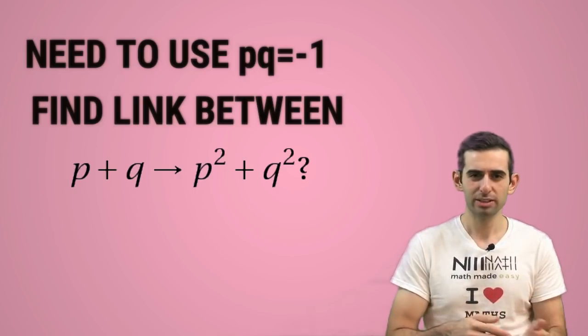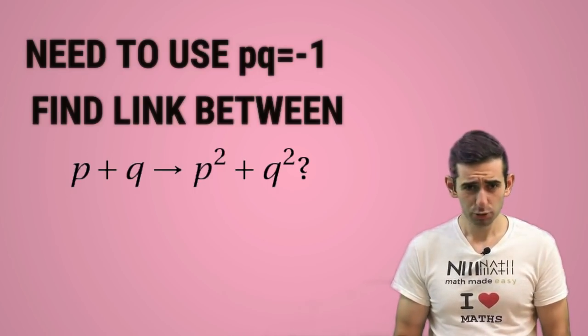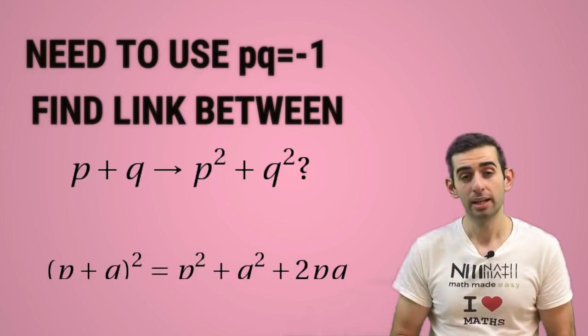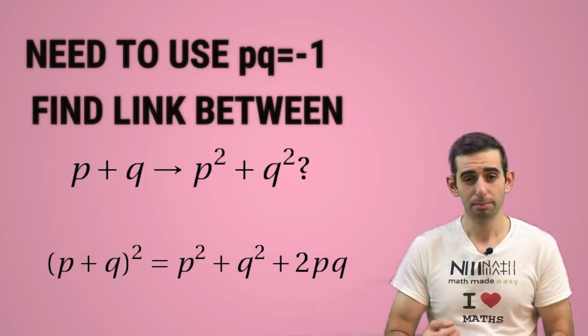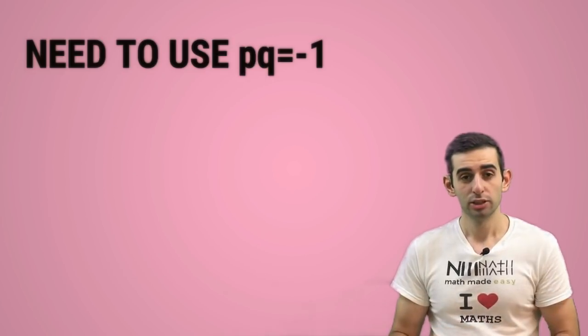It should be obvious that you have to square p+q, because if we square p+q we get p²+q²+2pq. So then that means we just square the x equation.